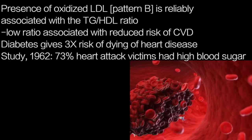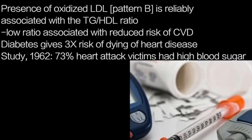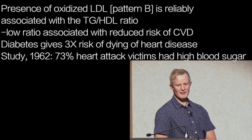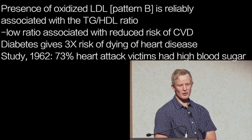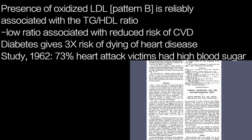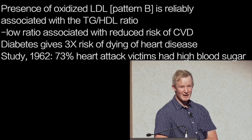Another major factor in heart disease is diabetes, which is associated with the tripling of the risk of death from heart disease and stroke. That high levels of sugar in the blood are so problematic has been known for a long time — research from 1962 demonstrated glucose abnormalities in 73% of heart attack patients, and again the mechanism is oxidative stress.